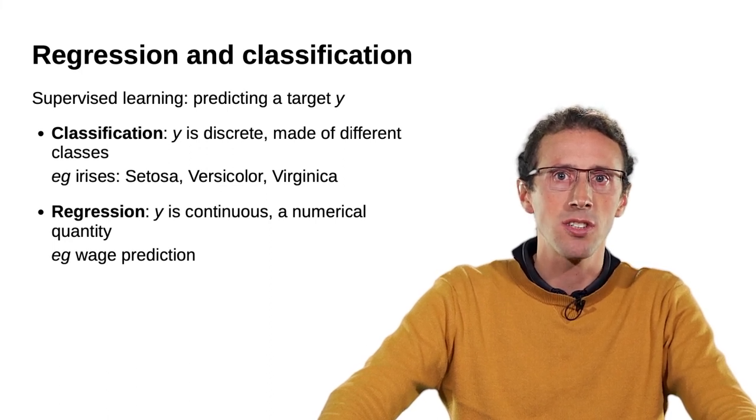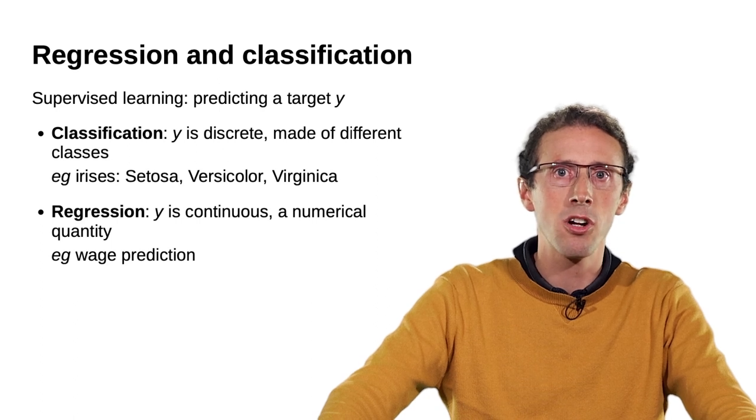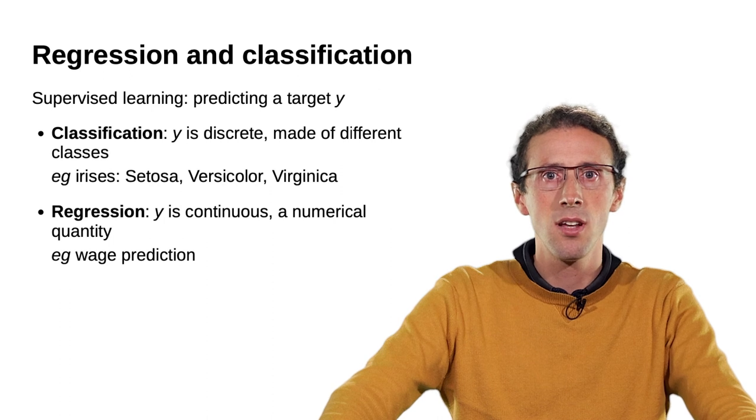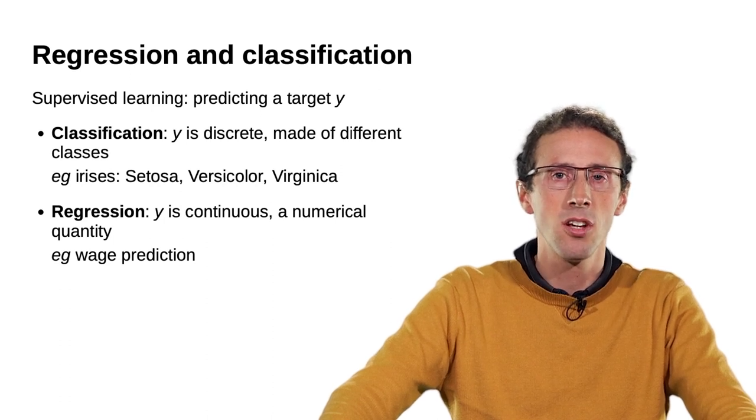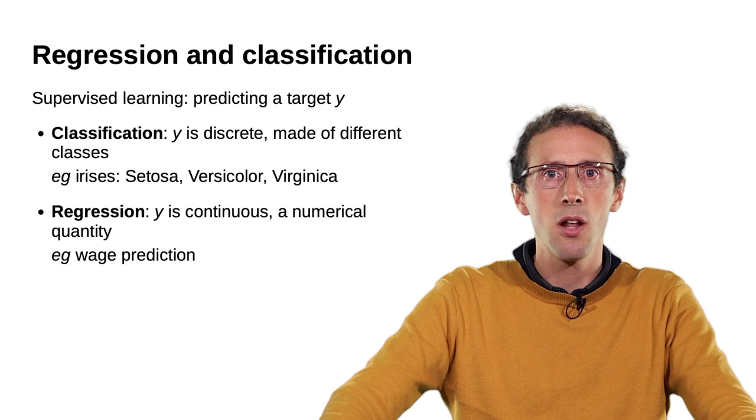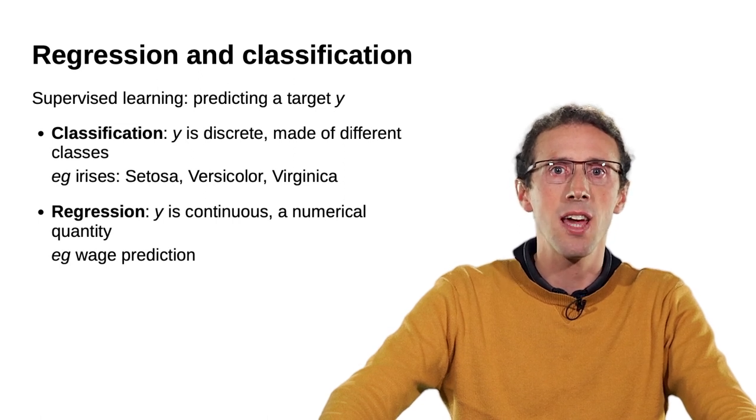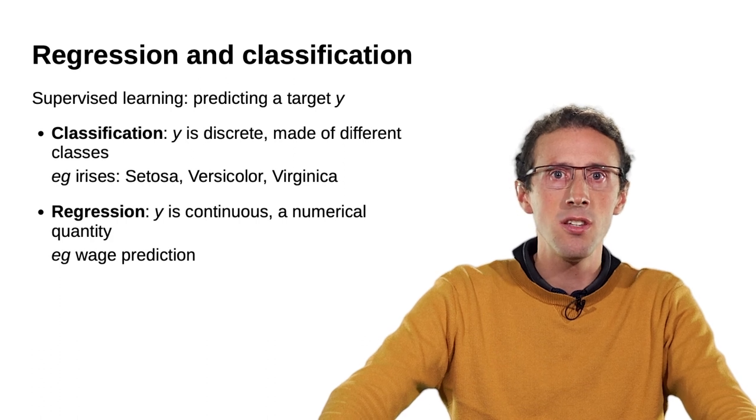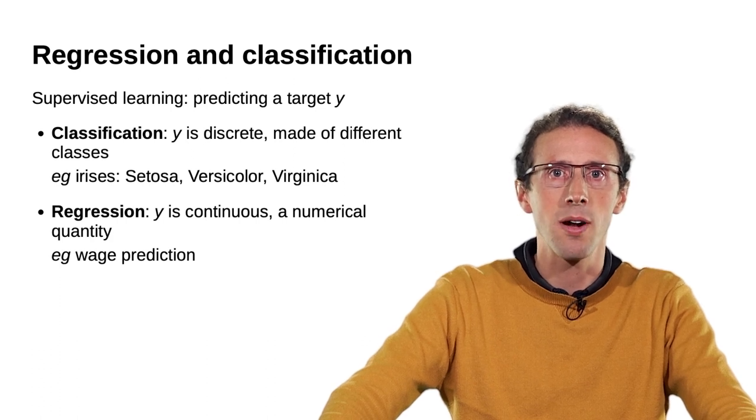It may be continuous, describing a numerical property of our observation. For instance, when trying to predict from the census who is rich, it would be interesting to predict the income in dollars. In such a situation, we say that it is a regression task.